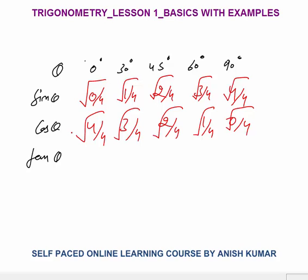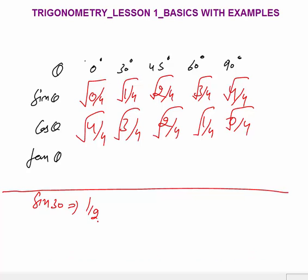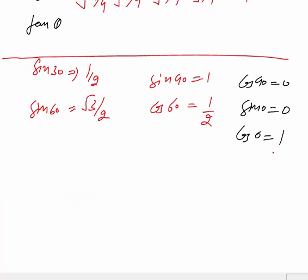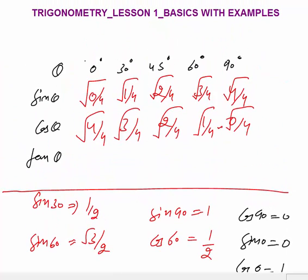Using this pattern: sine 30° = √(1/4) = 1/2. Sine 60° = √(3/4) = √3/2. Sine 90° = 1. Cos 60° = √(1/4) = 1/2. Cos 90° = 0. Sine 0° = 0. Cos 0° = 1. So the pattern 0,1,2,3,4 divided by 4 then square-rooted gives all sine and cos values for 0°, 30°, 45°, 60°, and 90°.